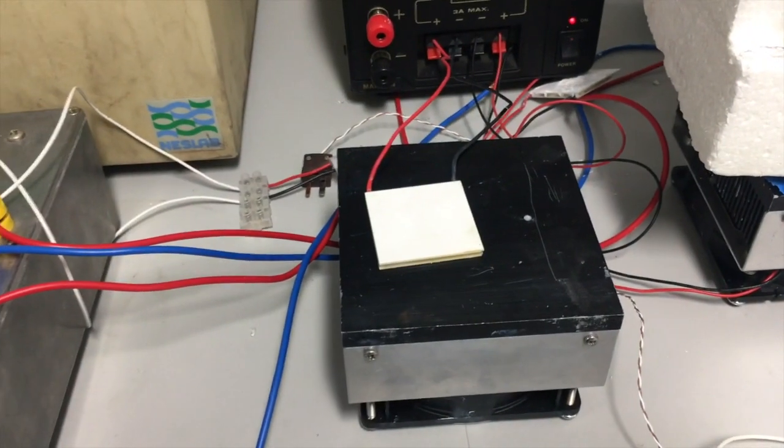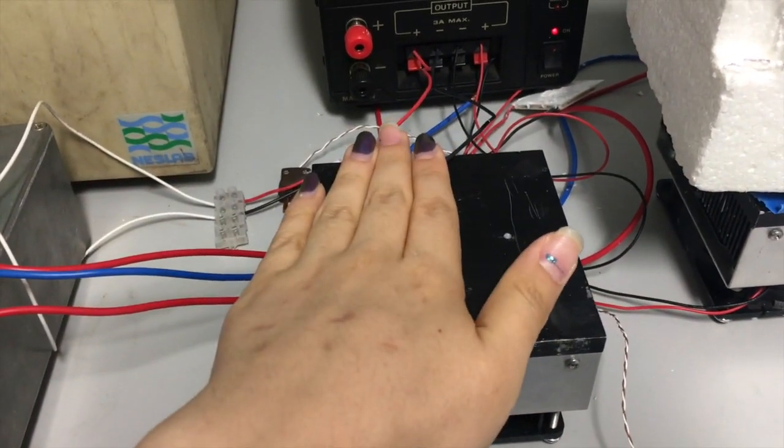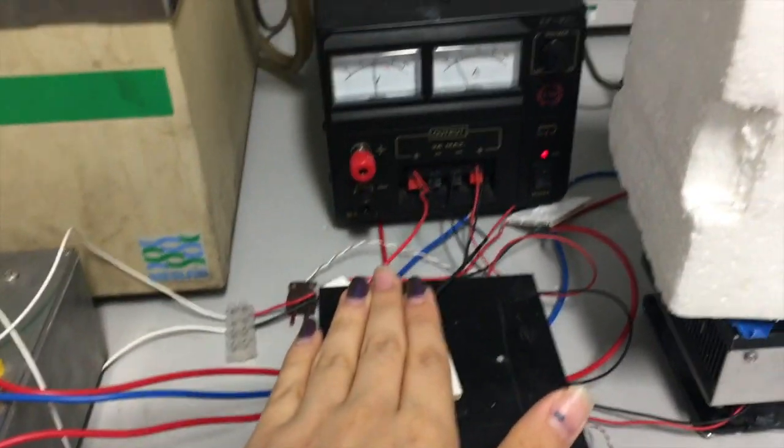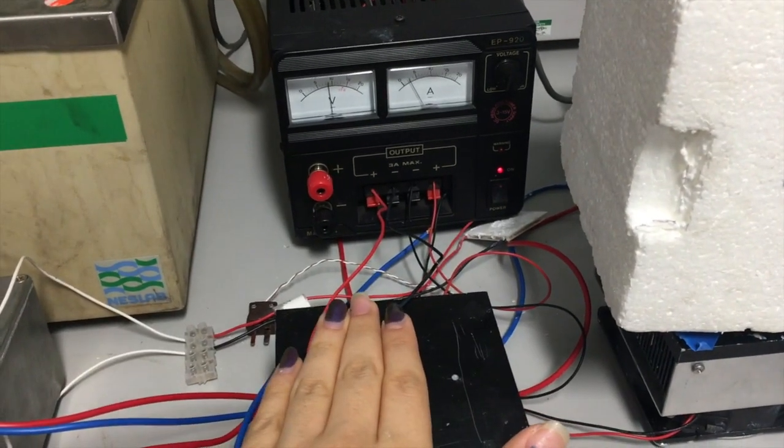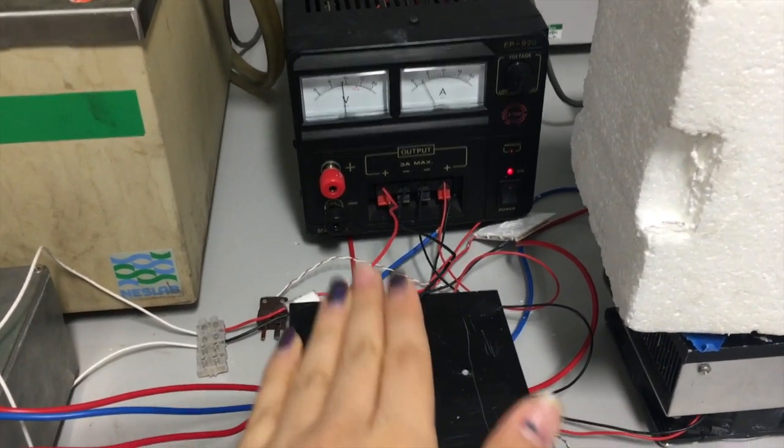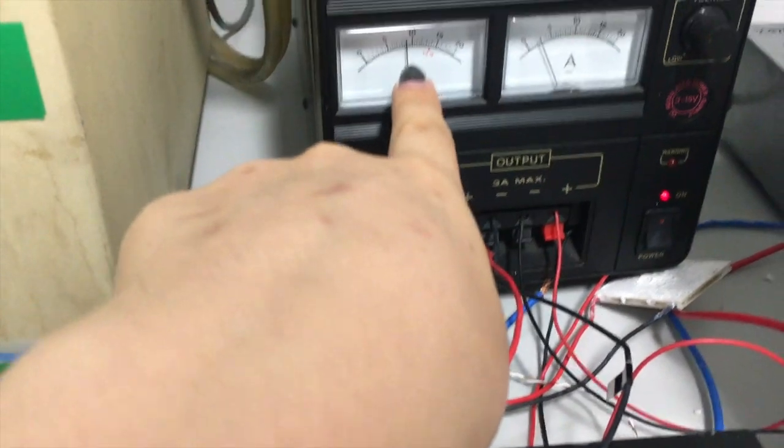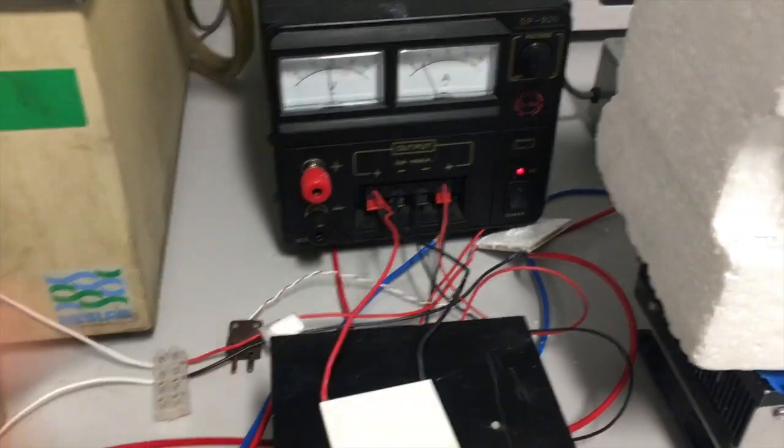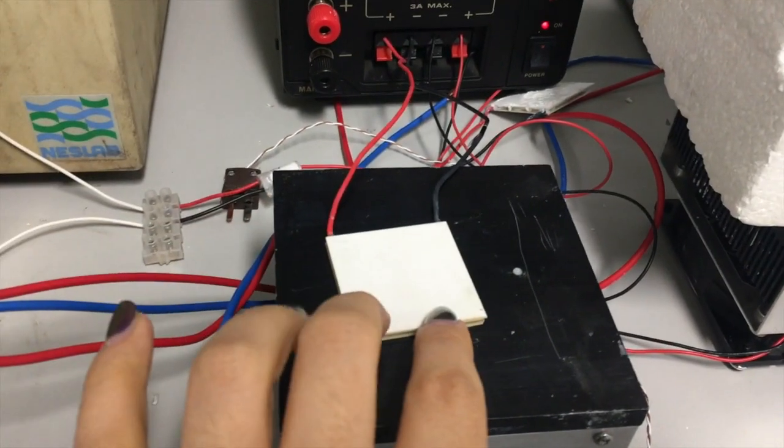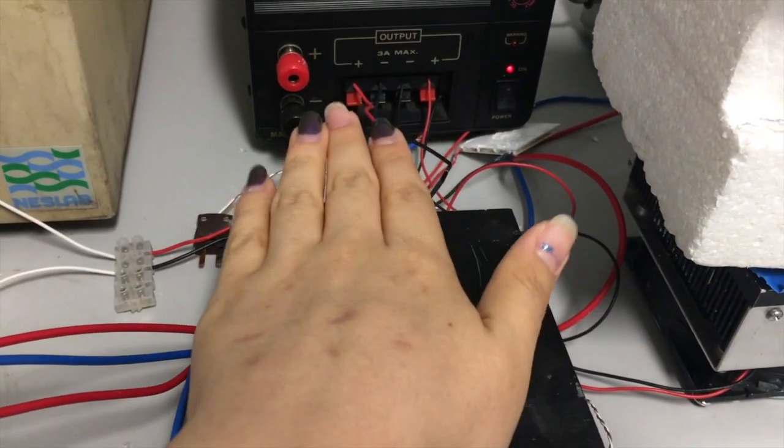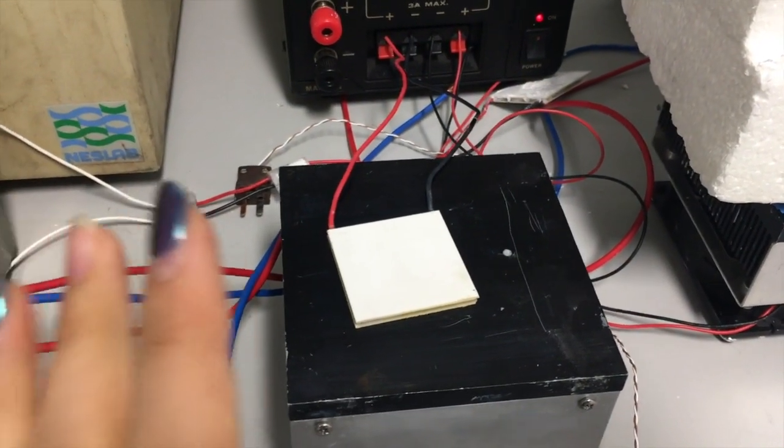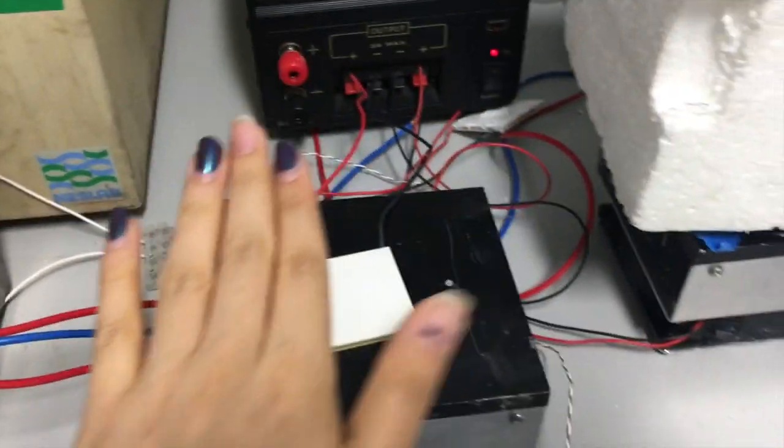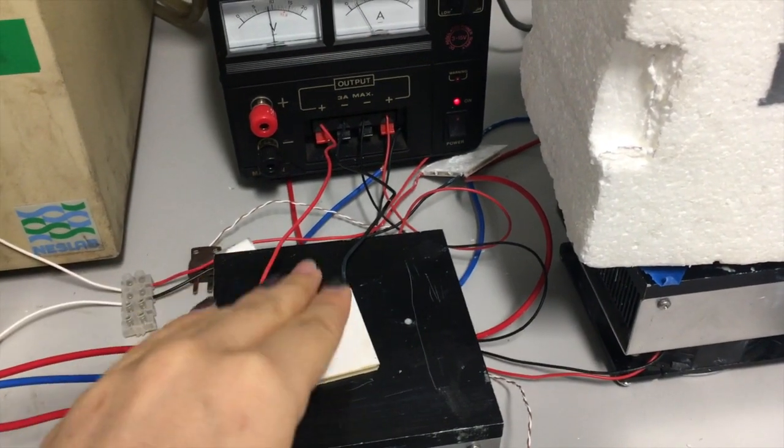Right now I can clearly feel that this side is really cold. If I put my finger on it, it's really cold. I set the voltage to 9 volts, that's probably why it's so cold. It'll probably start to condensate in a while. The other side should be really hot, so now we know which side is the cooling side.